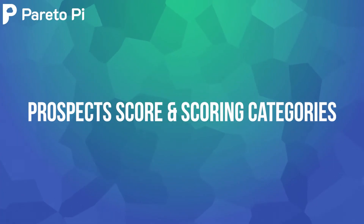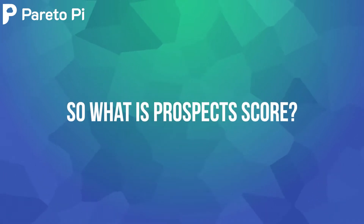In this lecture we'll learn what is Pardot score and scoring categories. Prospect score is a sum of points a prospect gets after he or she has been cookied and interacts with your assets, that further result in a single number that is the prospect score.